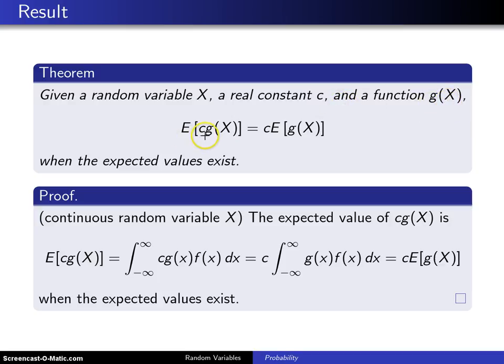Then the expected value of c times g of X is equal to c times the expected value of g of X when the expected values exist. The proof,